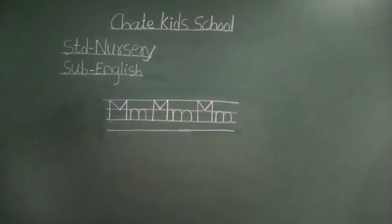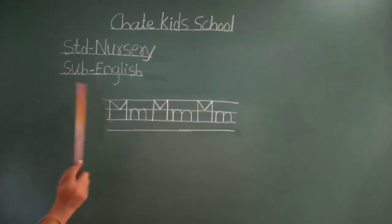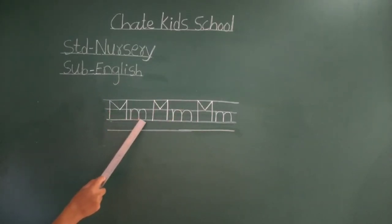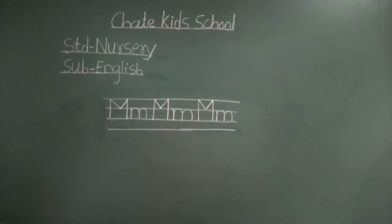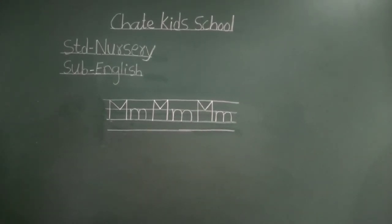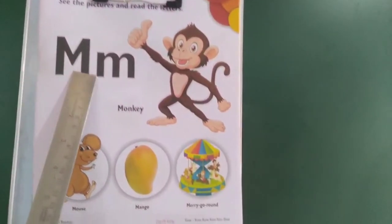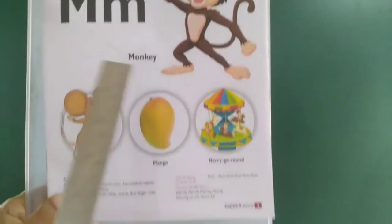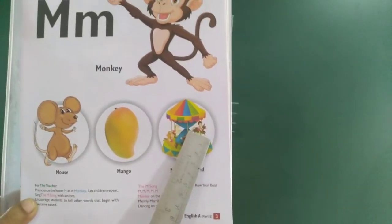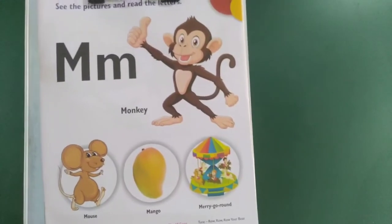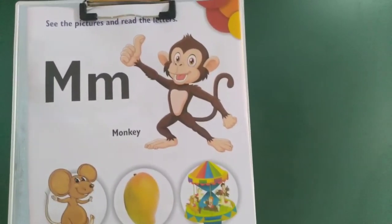M letter sounds M. Capital M and small m — got it, you all? M for monkey. Mango. Marigold. Moon.